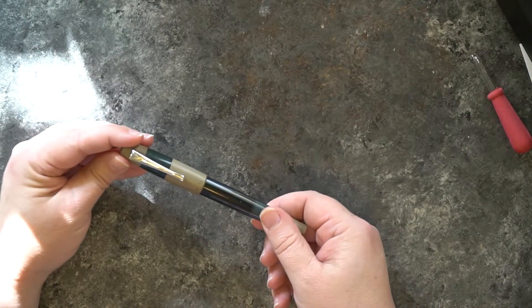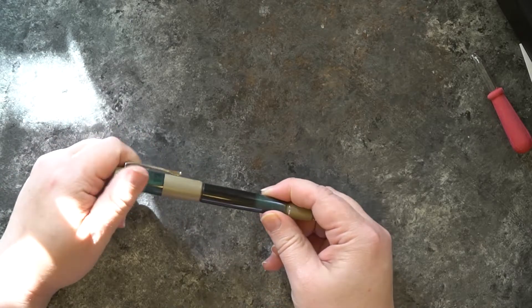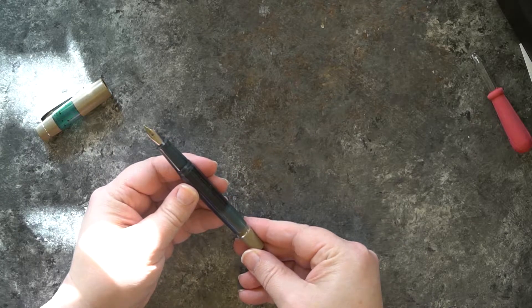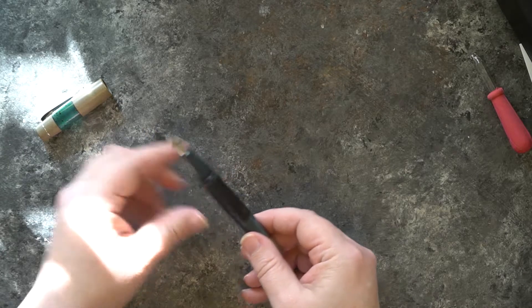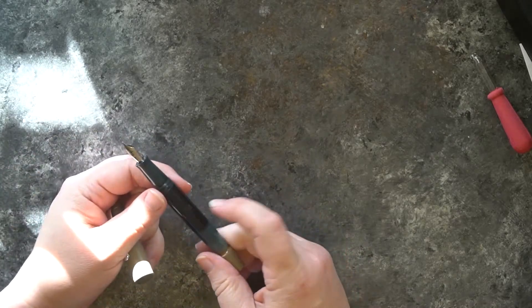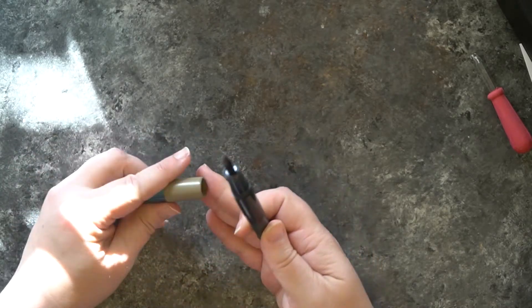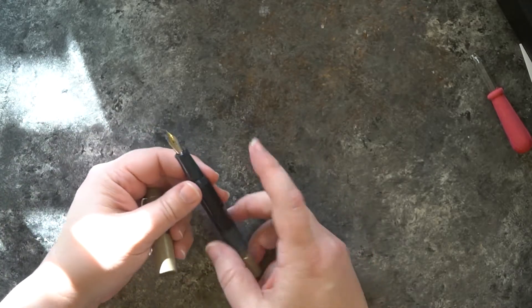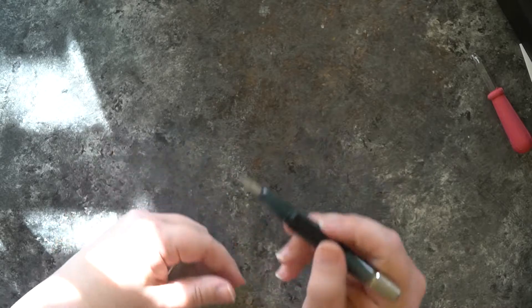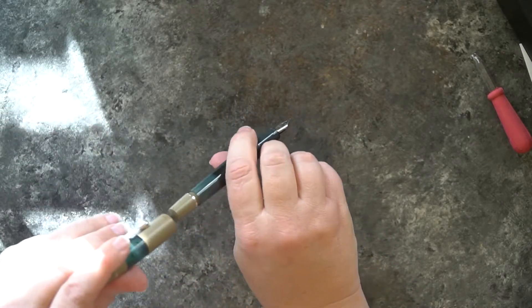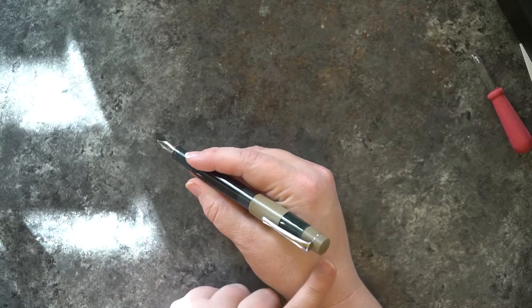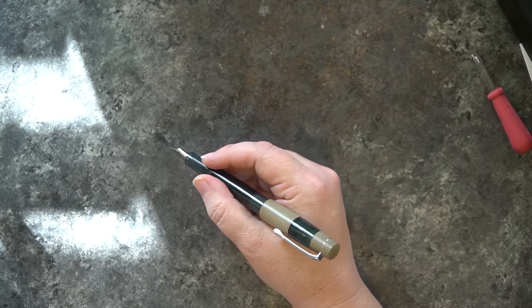So this is the one in green and tan and this has a number five size nib on it. So really nice. I believe this is celluloid and this just looks like some type of plastic. It has a number five size nib, it's really comfortable in the hand. I don't typically post with it. I think for me it's a little back weighted when it's posted.